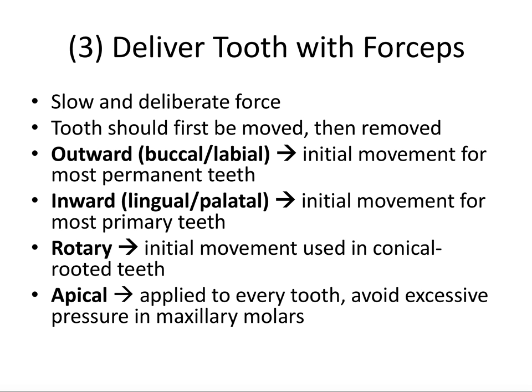Step three is to deliver the tooth with forceps. Any forces should be held for several seconds to allow the bone time to expand, instead of jerking one way and then the next — that's how things tend to break and fracture. A great concept is that the tooth should first be moved and then removed. All three steps are working towards the same goal: breaking the periodontal ligament fibers and expanding the investing bone sufficiently to make the tooth mobile, then allowing delivery from the socket. Your opposite hand might grab the alveolar process to provide tactile information about bone expansion and also to support and stabilize the jaw for lower teeth.